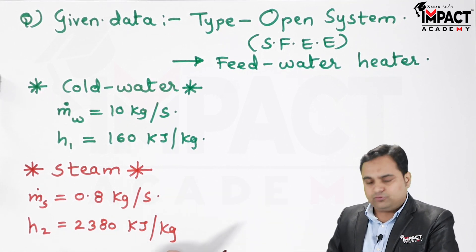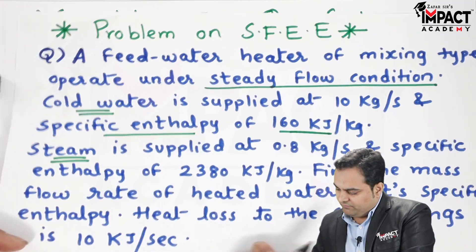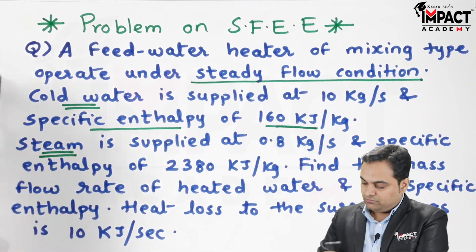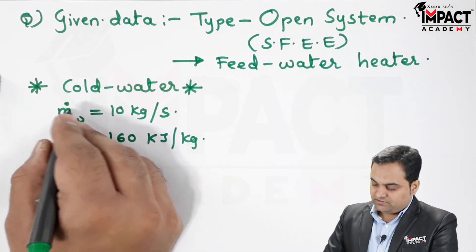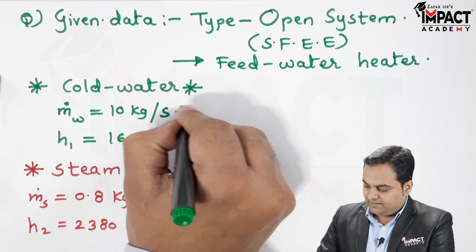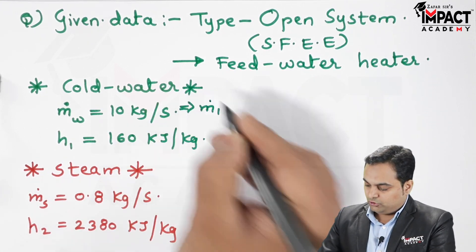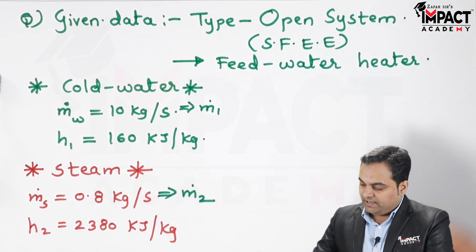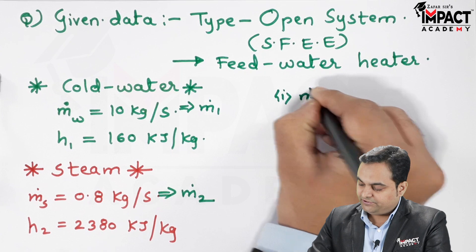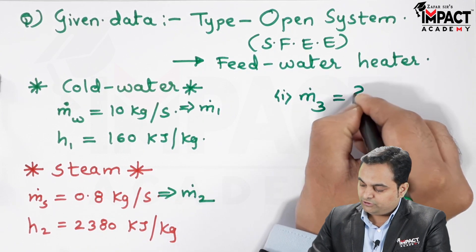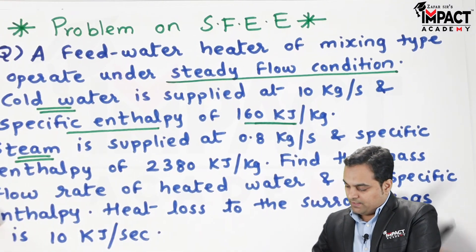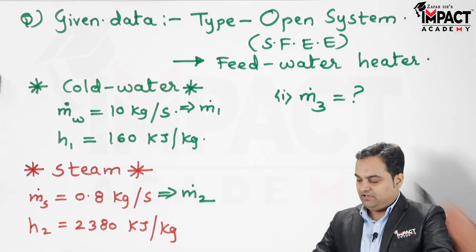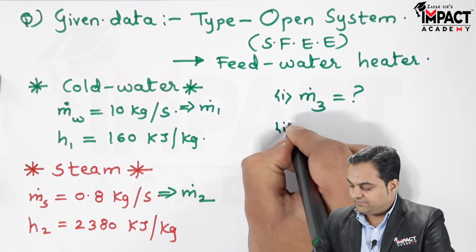We have to find the mass flow rate of heated water. I am denoting the mass flow rate of cold water as M_dot1, the mass flow rate of steam as M_dot2, and what we have to find out is the mass flow rate of heated water, which would be M_dot3. We also have to find its specific enthalpy, which I am denoting as H3 for the heated water.